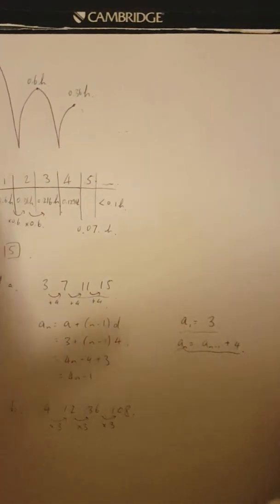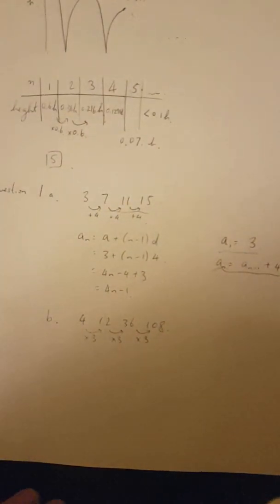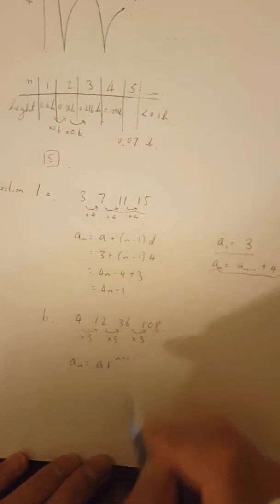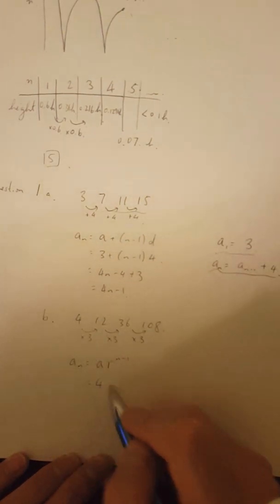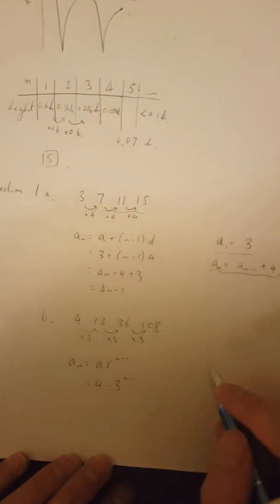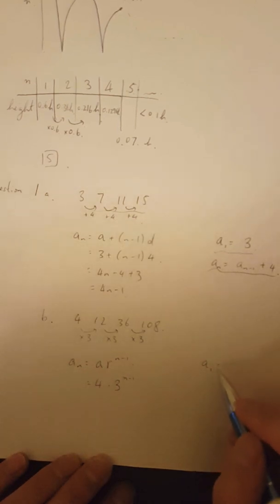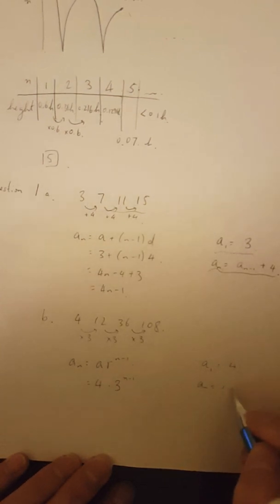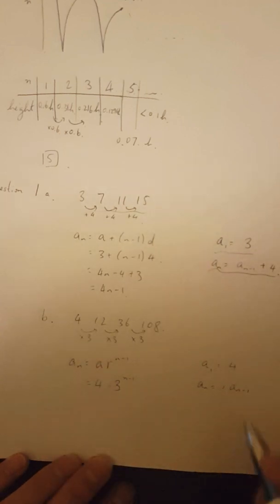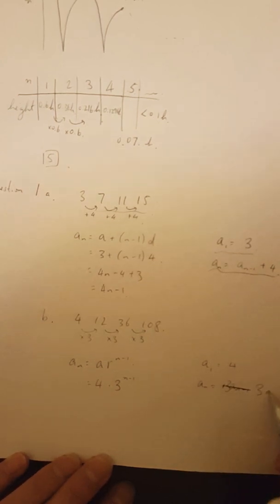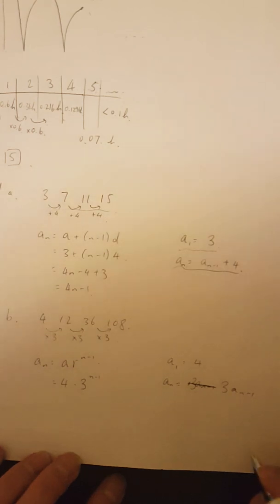So we can use the formula for a geometric sequence: A_N equals A times R to the power of N minus one, which equals the first number four times the common ratio three to the power of N minus one. So this is the explicit form. For the recursive form, again, you have to state the first number, which is four. And then how do you get the Nth number from the N minus one number? You multiply by three, so it's going to be three times A_{N-1}. You need both parts for the recursive form.